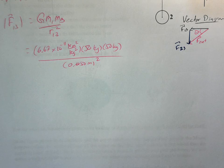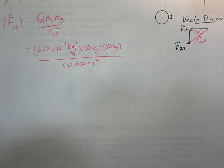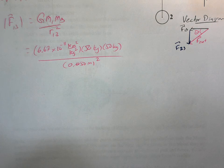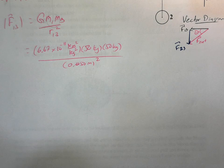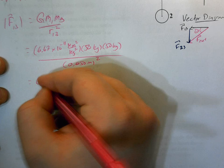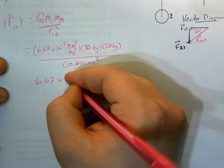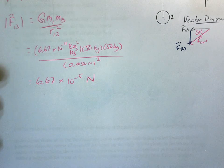Again, don't forget that conversion of centimeters to meters. So let's have a look at what we got here. So we're going to get 6.67 times 10 to the minus 5 newtons. Okay, not too bad.